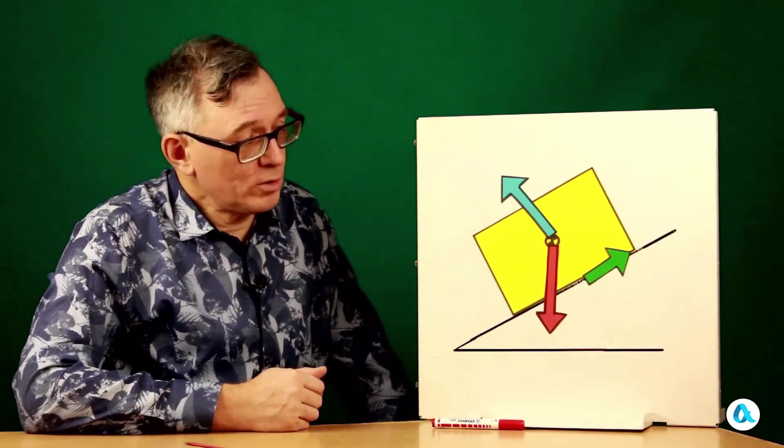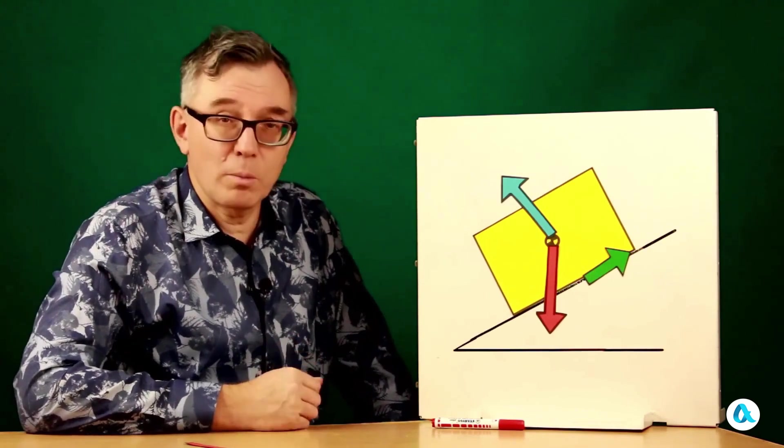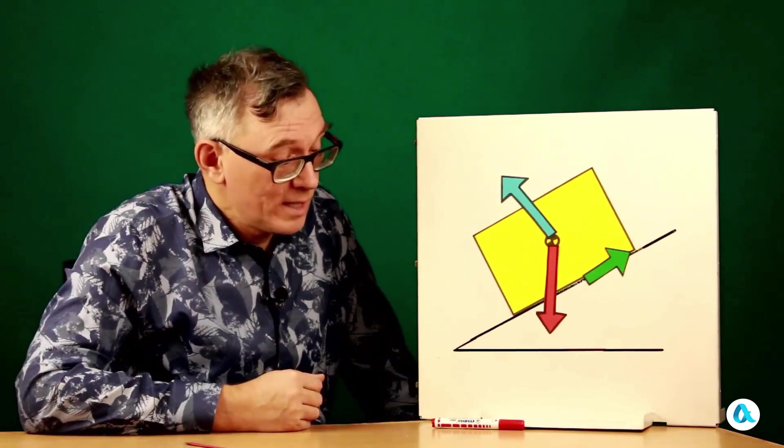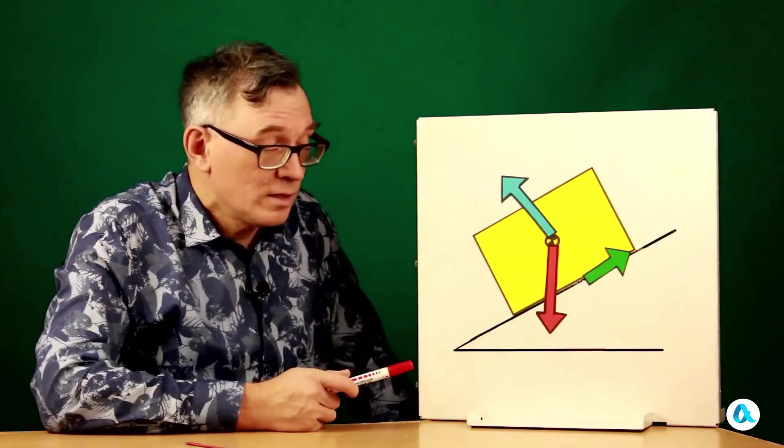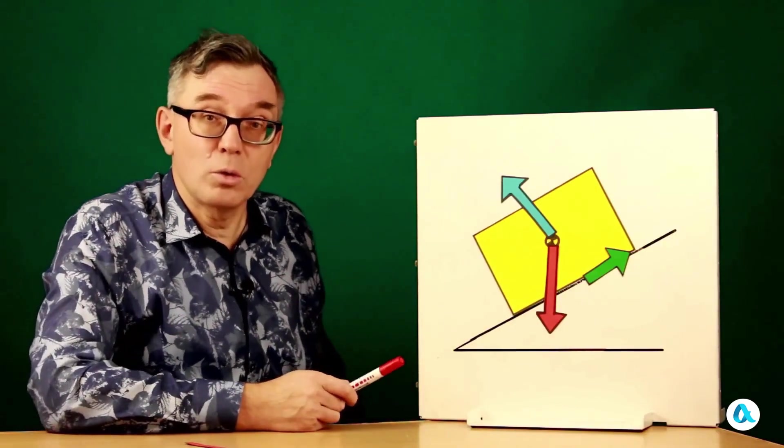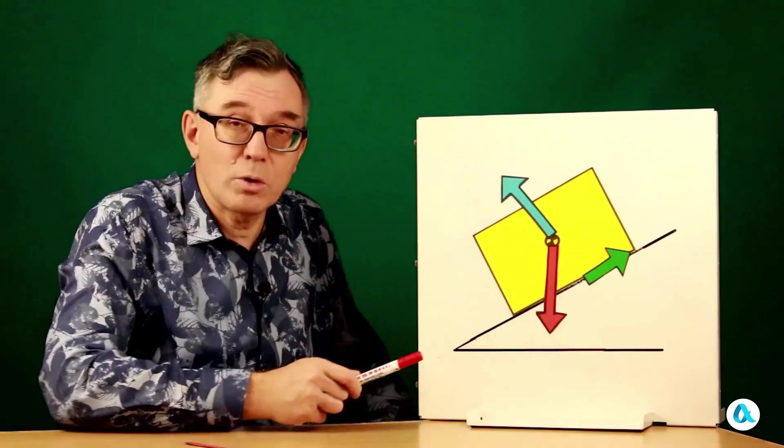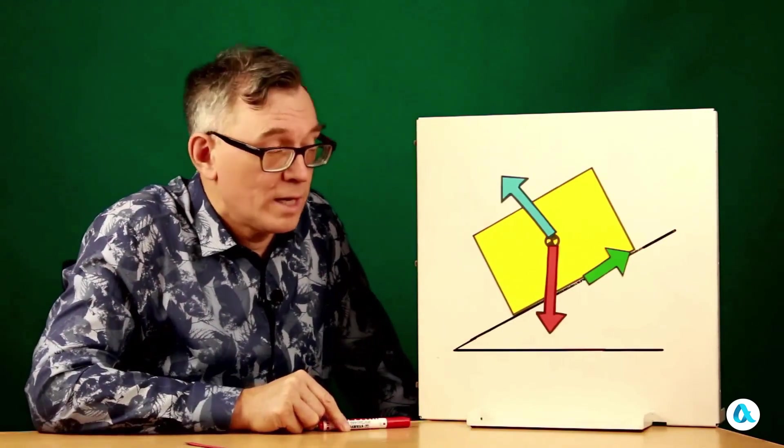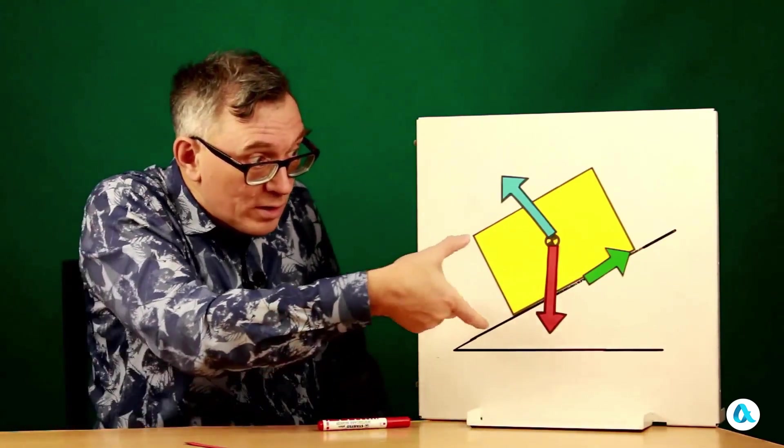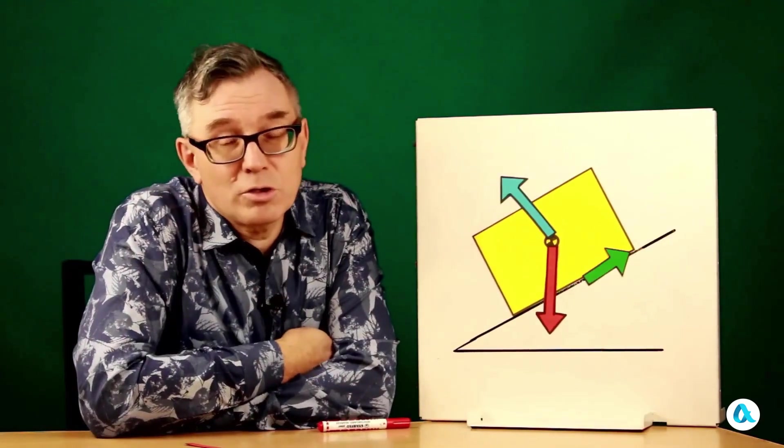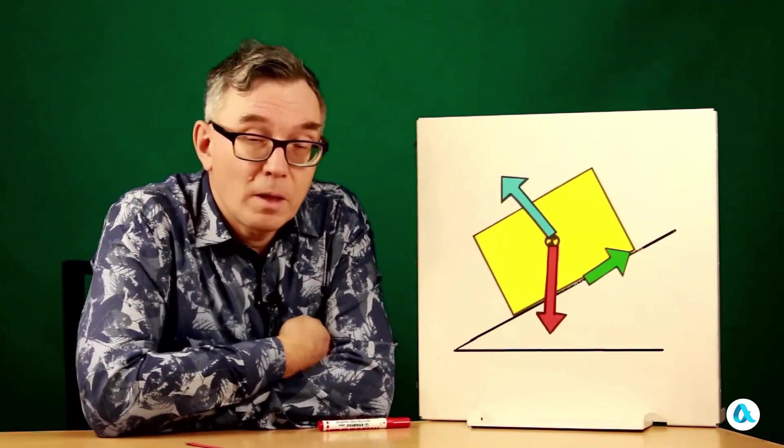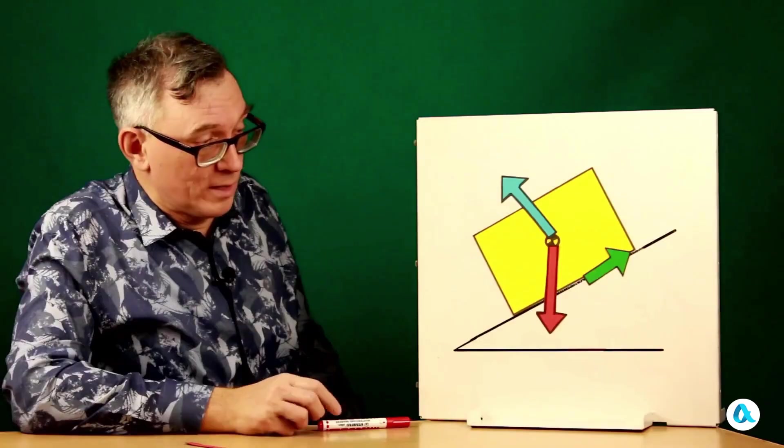But if you look closely, there is one problematic feature in this diagram. The moments of these two forces relative to the center of mass are zero, but the moment of the friction force is actually not zero at all. It turns out that the brick should start rotating in this direction, which, you have to admit, looks extremely strange.